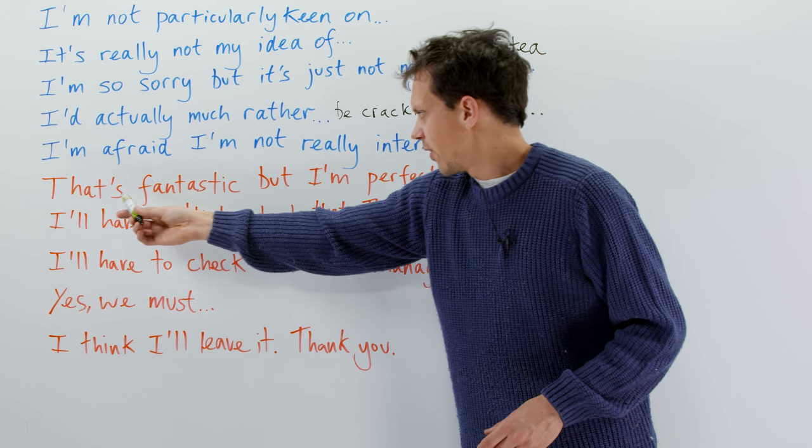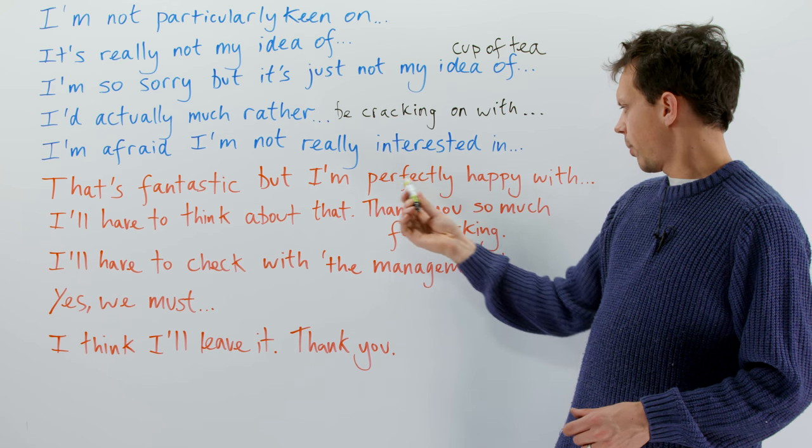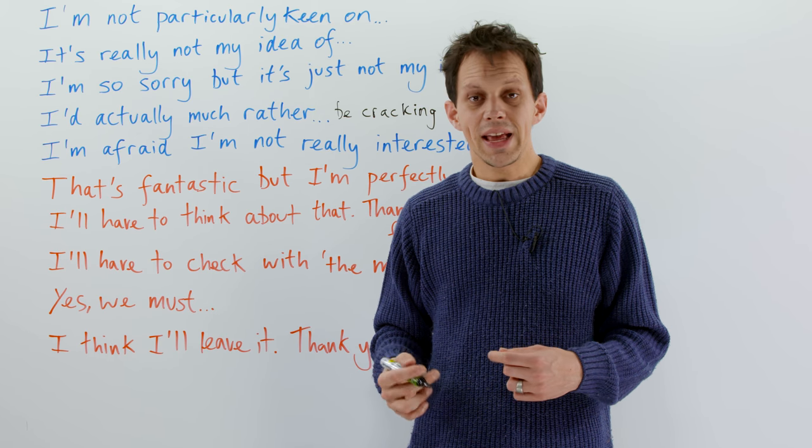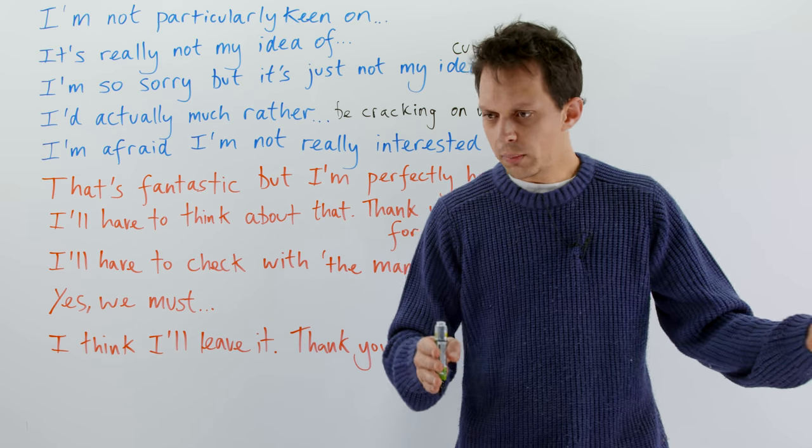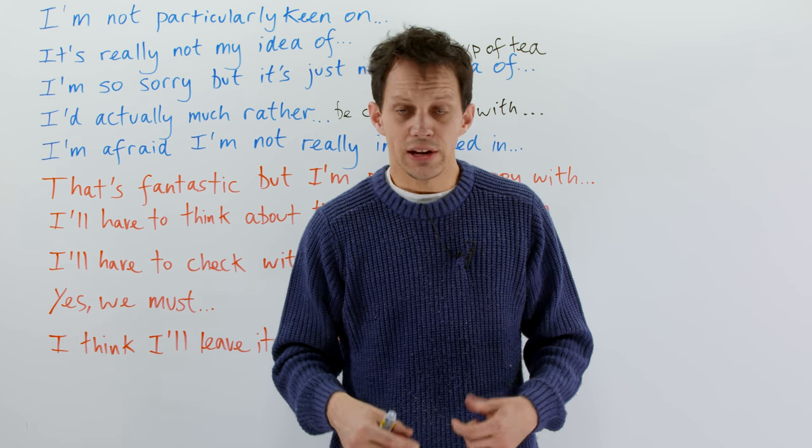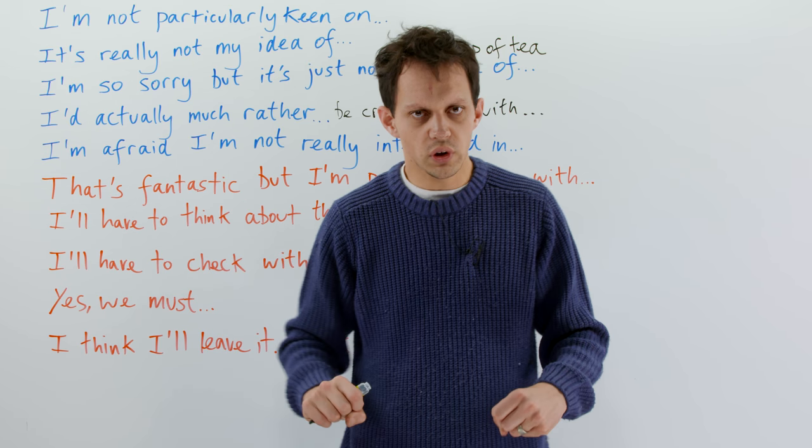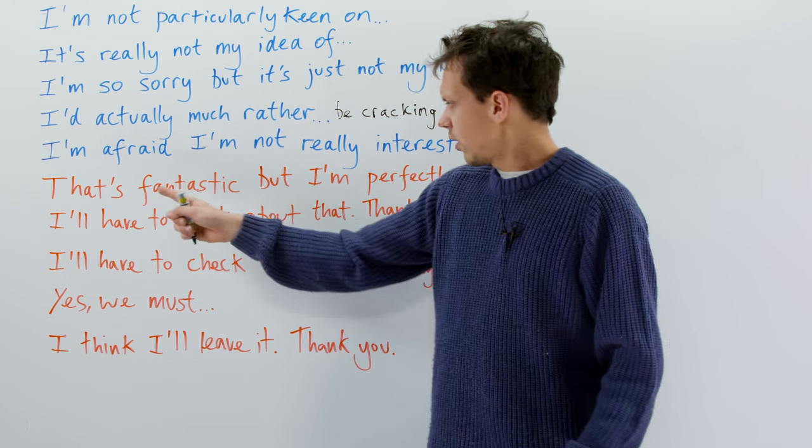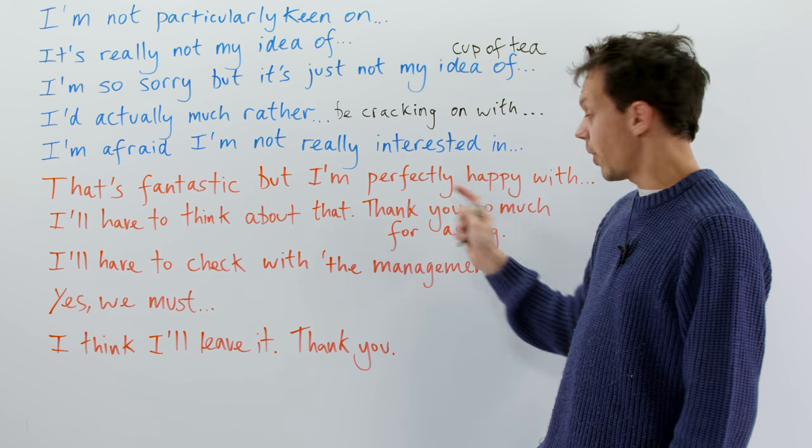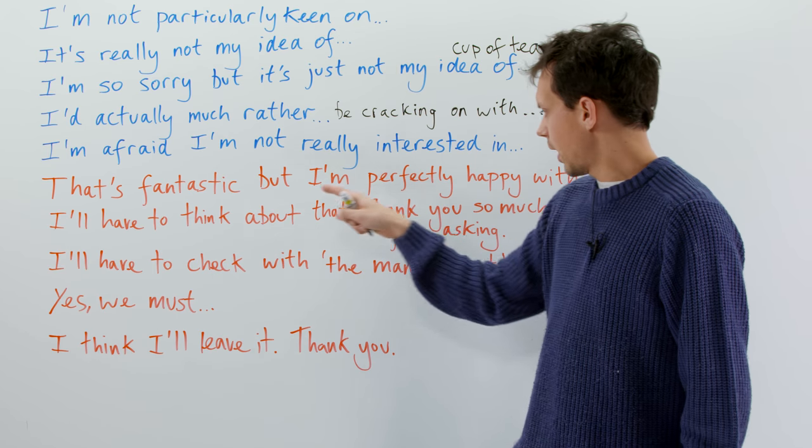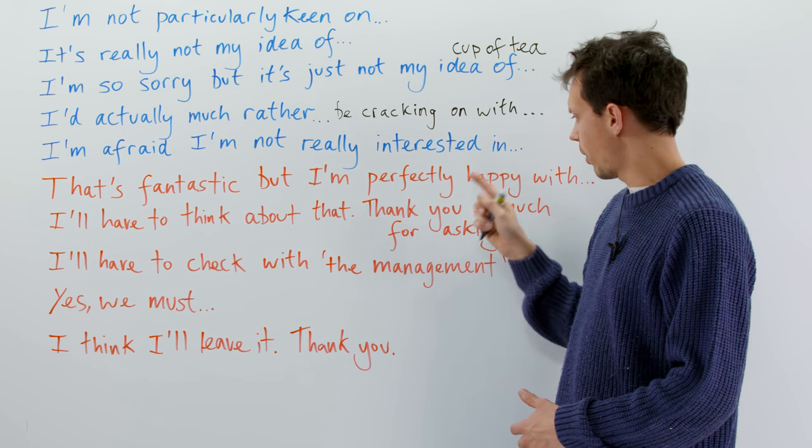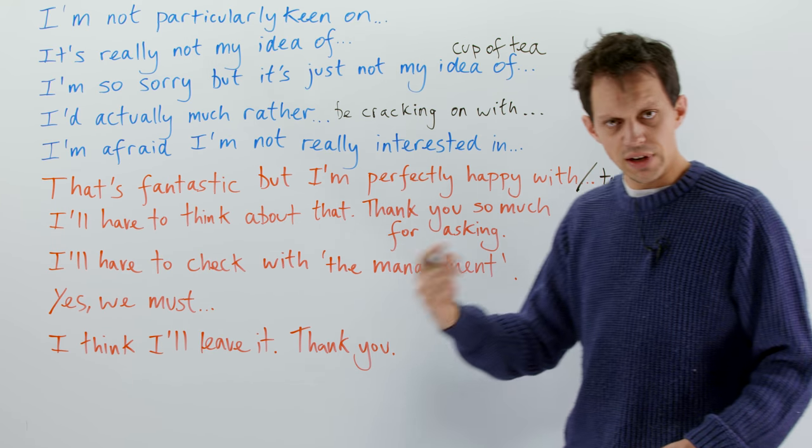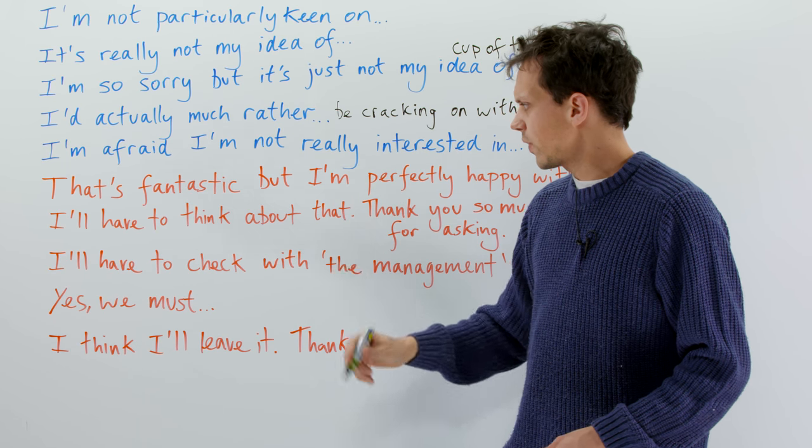Option number six. That's fantastic, but I'm perfectly happy with. So, let's have a different scenario now. Let's say that we are in the West End and we're going between places and an enthusiastic young rickshaw driver, a cycle rickshaw, comes up and offers us a lift for a ridiculous amount of money to go about 100 yards. So, you say, that's fantastic, but I'm perfectly happy with walking. Thank you. I'm perfectly happy with walking. I'm perfectly happy to walk. So, you could have a to there, infinitive verb. That's fantastic, or that's so kind.